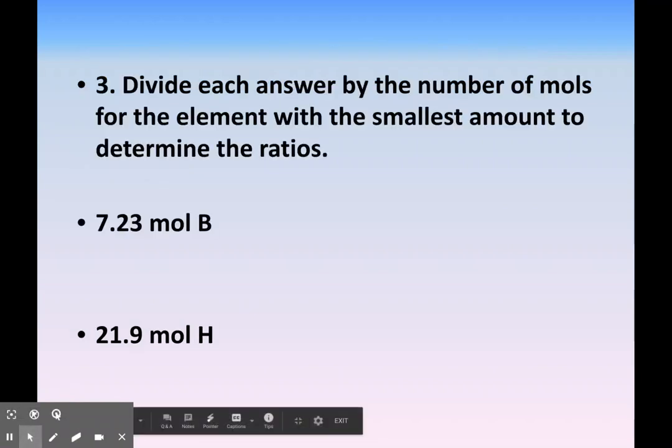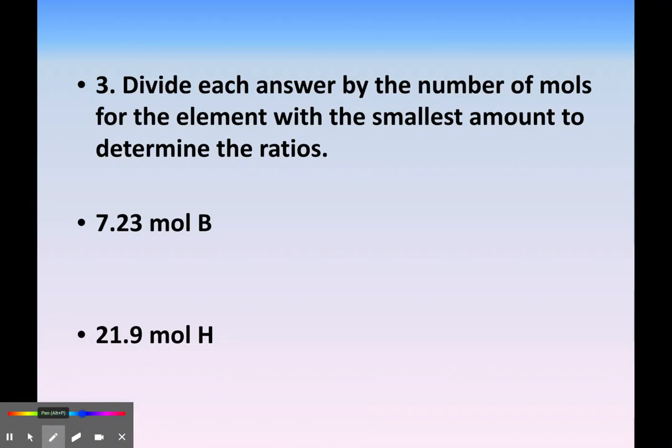Now we take those mole amounts and divide each by the smallest number, which is 7.23. We're trying to get the ratio that will be used as our subscripts. So divided by 7.23, that's going to be 1, and then 21.9 divided by 7.23 gives me 3.